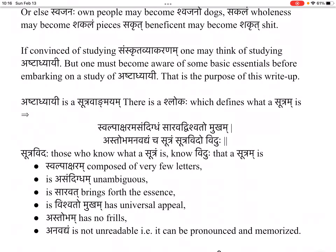There is a shloka which defines what a Sutra is: 'Svalpāksharama-sandiddham sāravad-viśvato mukham astobhamana-vadhyanjcha sutram sutra-vido viduhu.' Those who know what a Sutra is, know that a Sutra is: Svalpāksharam — composed of very few letters; asandiddham — unambiguous; saravat — brings forth the essence; vishvato mukham — has universal appeal; astobham — has no frills; anavadyam — is not unreadable, that is, it can be pronounced and memorized.